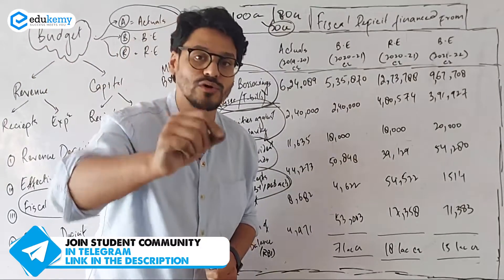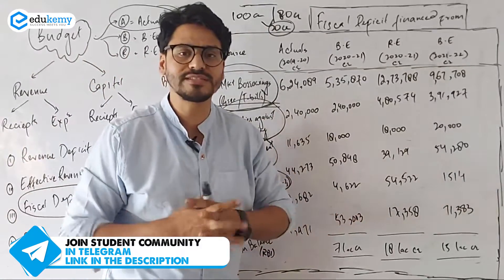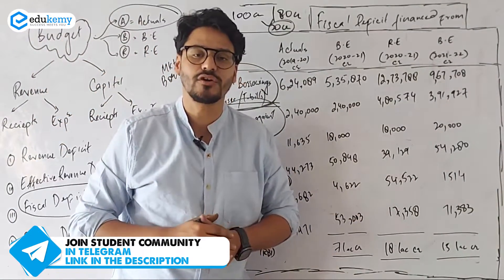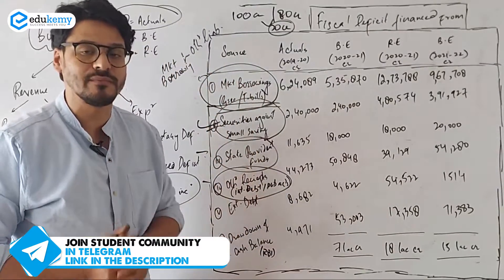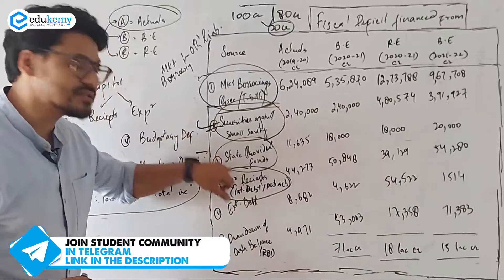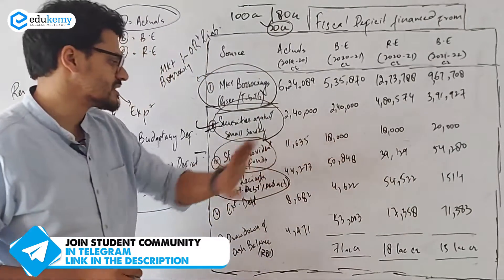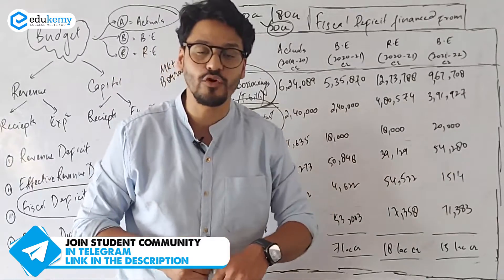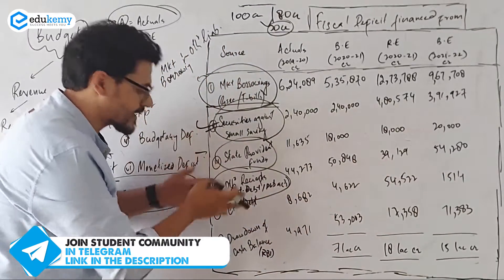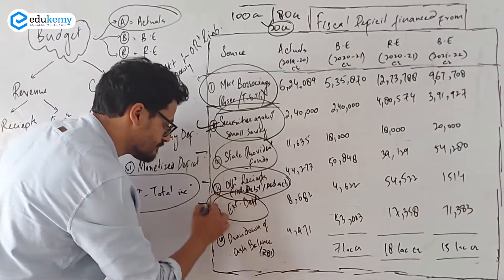Then you have other receipts, which is also a source of fiscal deficit. Under other receipts, there is money from the public account. Various accounts are mentioned in the Constitution, and the public account is one of them. The government receives certain receipts under the public account, considered under other receipts. The government takes some money from the public account — only around 54,000 crores — and that is your other receipts as a source of fiscal deficit.